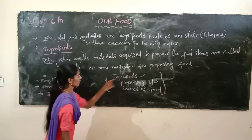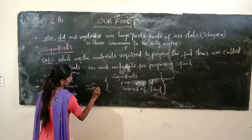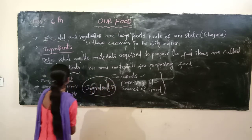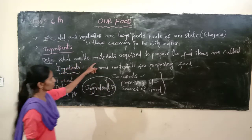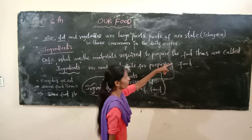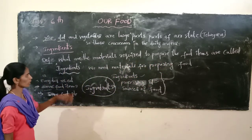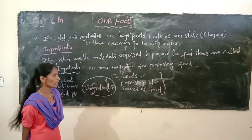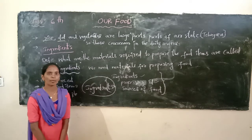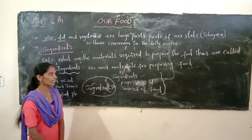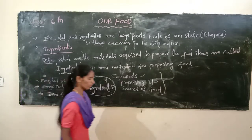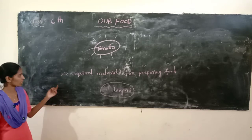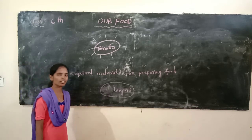First of all, we discuss about ingredients. Ingredients means: what are the materials required to prepare food items are called ingredients. We need materials for preparing food — those are called ingredients.